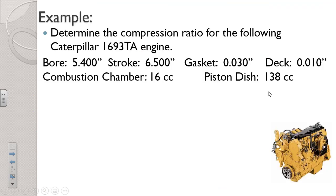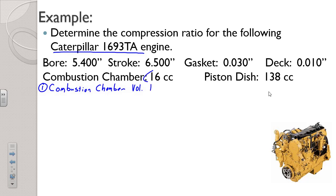I'm going to go through one more with you a little more quickly, just to make sure you've got the concept. Let's look at this Caterpillar 1693 engine. This is a diesel engine, so we should expect a higher compression ratio. Going through our five volumes — first, our combustion chamber volume is given at 16.39 cc's, so we just need to convert that to cubic inches: 0.98 cubic inches. That's volume number one.